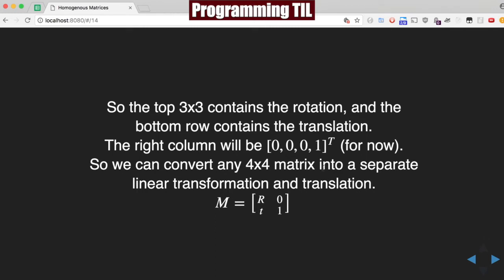And then we can convert this 4x4 matrix into a separate linear transformation and translation. So this is a very shorthand way to put this, where we have the rotation at the top, the translation at the bottom, and then 0, 1, just to kind of represent what that matrix looks like.